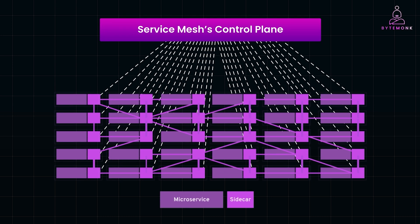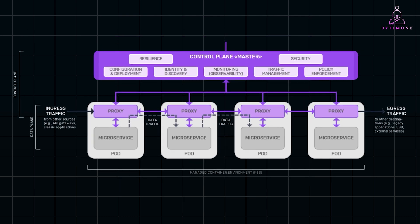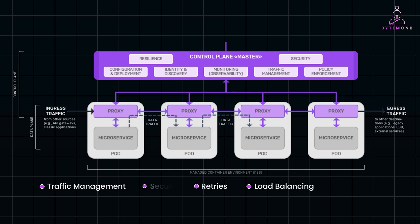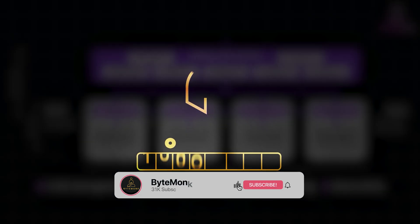Think of it as an invisible layer that sits between services and manages how they talk to each other. It abstracts the complexity of communication, allowing you to focus on writing code, while the service mesh takes care of things like traffic management, load balancing, retry, security, and observability.